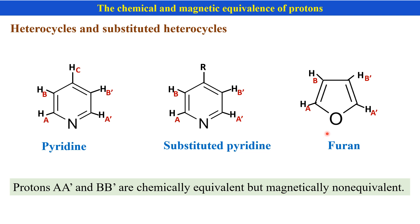This is also observed in the case of substituted pyridine or five-membered heterocyclic rings such as furan, thiophene, pyrrole, etc. In those cases also, there are chemically equivalent but magnetically non-equivalent protons.